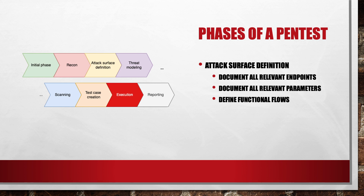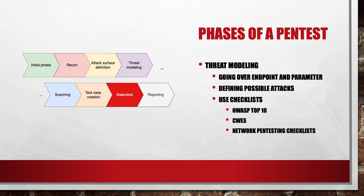Then we define the attack surface — all the relevant endpoints, parameters, functional flows, and objects that describe our application and might be relevant. After we have our attack surface, we do threat modeling: we go over every single endpoint and parameter and compare it against the coverage we want, like the OWASP Top 10, to predict any potential vulnerabilities or issues that might be present.